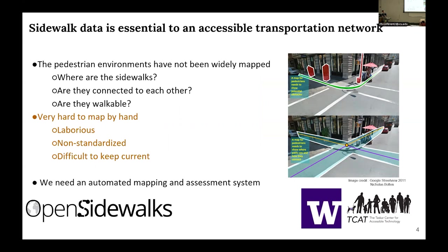Currently, most mapping methods typically rely on human survey collection and annotations. These methods are laborious, typically non-standardized, and very difficult to maintain up to date. Therefore, we need an automated mapping and assessment system to have an efficient and scalable way to generate a map that can be used by pedestrians.